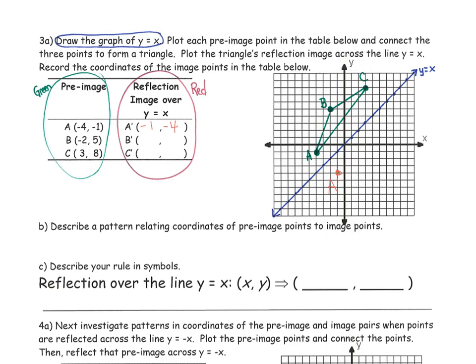b prime would be 5, negative 2. Let's see if that looks right. Over 5: 1, 2, 3, 4, 5. Down 2. That would be b prime. And then, c prime would look like 8 comma 3. Go over 1, 2, 3, 4, 5, 6, 7, 8. Up 1, 2, 3. And it sure looks like that pattern works. The pattern would be we're going to switch the x and y. And the rule is, if I start with x, y, then it's going to get mapped to a y comma x.